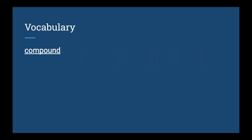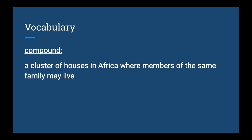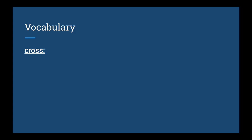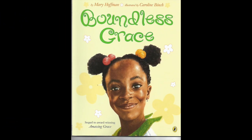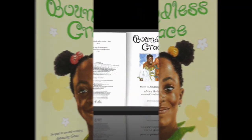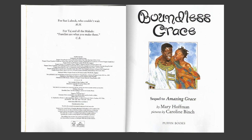First, let's think about some of the vocabulary. Your first word is compound — a compound is a cluster of houses in Africa where members of the same family may live. Your next word is cross, which means annoyed or angry. Your last word is manage — if you manage something, you cope with it, deal with it, or handle it. Today we're going to read Boundless Grace straight through from the beginning without stopping, and then we'll do some activities together at the end.